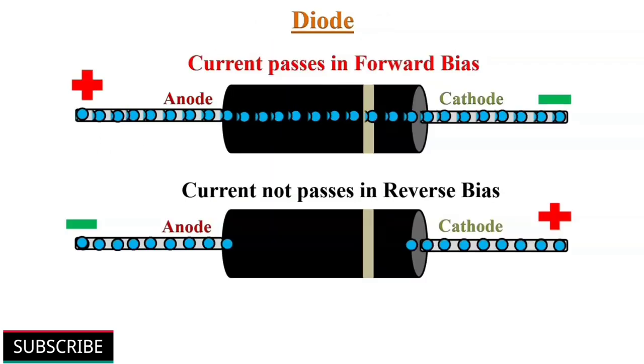A semiconductor diode acts as a one-way switch for flow of current. It allows current to flow easily in forward bias, but severely restricts current flow in opposite direction.